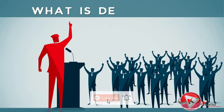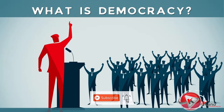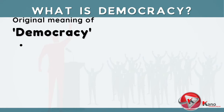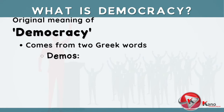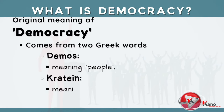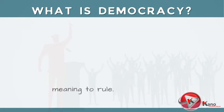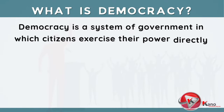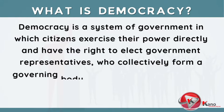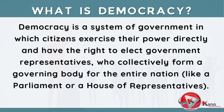So, what is democracy? The term democracy comes from the Greek words demos, meaning people, and kratin, meaning to rule. Therefore, democracy is simply a system of government in which citizens exercise their power directly and have the right to elect government representatives, who collectively form a governing body for the entire nation, like a parliament or a house of representatives.